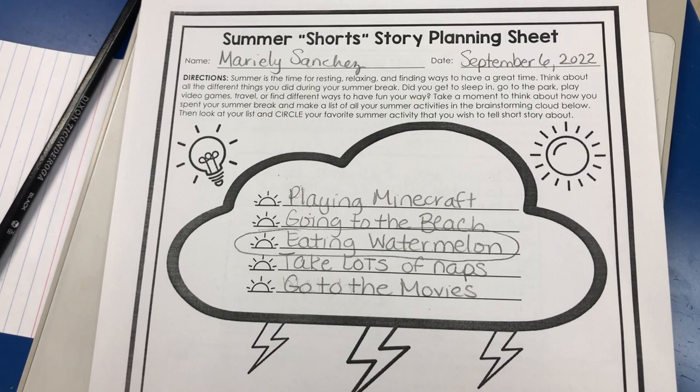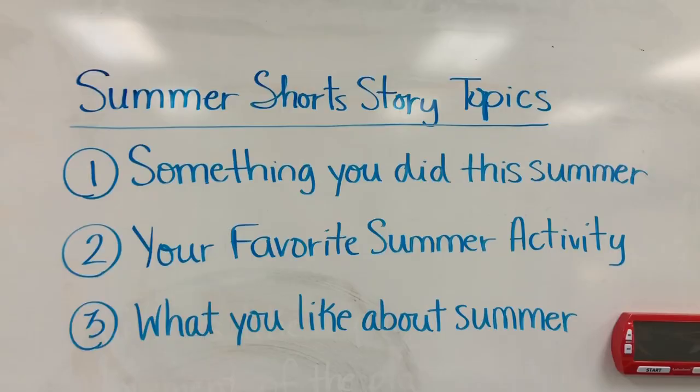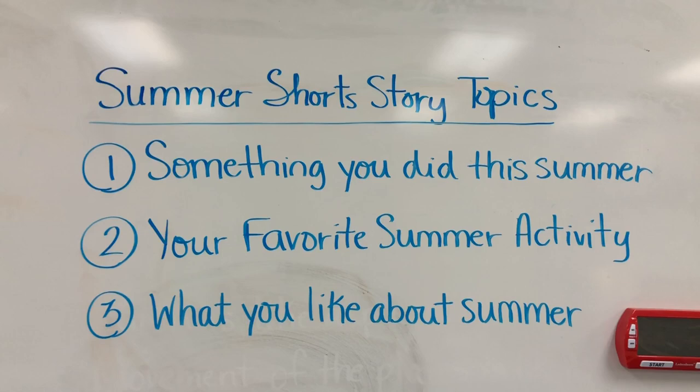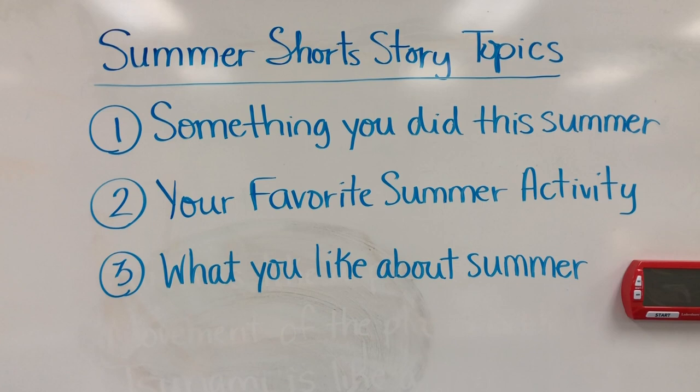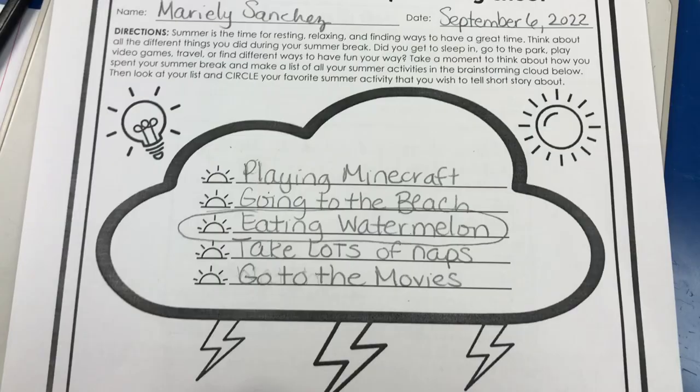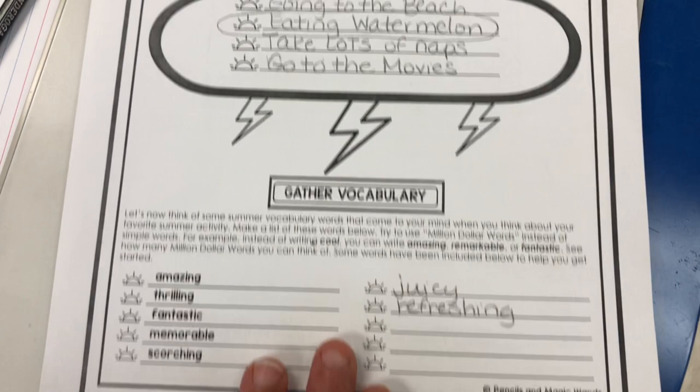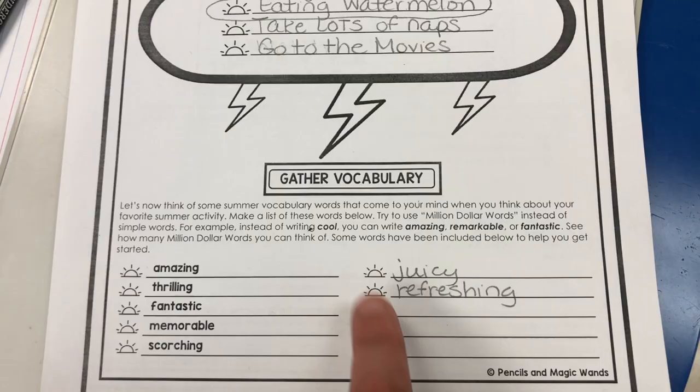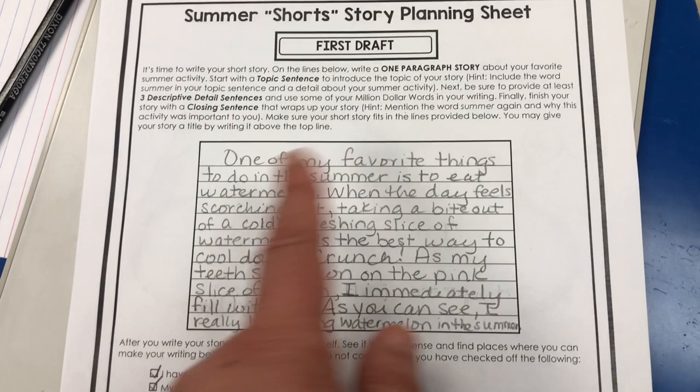Students first complete a planning sheet and they think about different topics. I gave students three different choices for this activity — they could focus their short story on something they did this summer, their favorite summer activity, or what they like about summer. During my block two this morning, I chose eating watermelon, and then I start them off with some words that they can gather as million dollar words and then some other words related to the activity they circled.